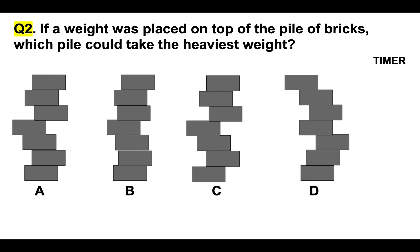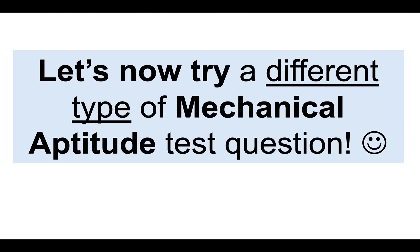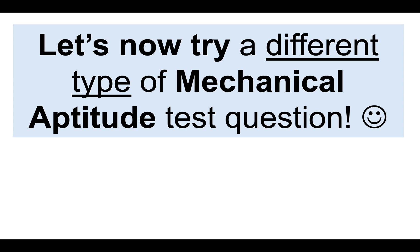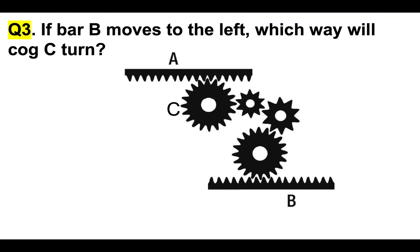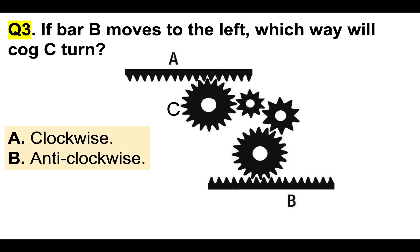We're going to progress and work through some harder ones. Let's now try a different type of mechanical aptitude test question. This is very common during mechanical aptitude tests: COGS. Cogs and wheels come up a lot — make sure you practice lots of these before the real test. Question three: if bar B at the bottom moves to the left, which way will COG C turn? Is it A — clockwise, or B — anticlockwise?